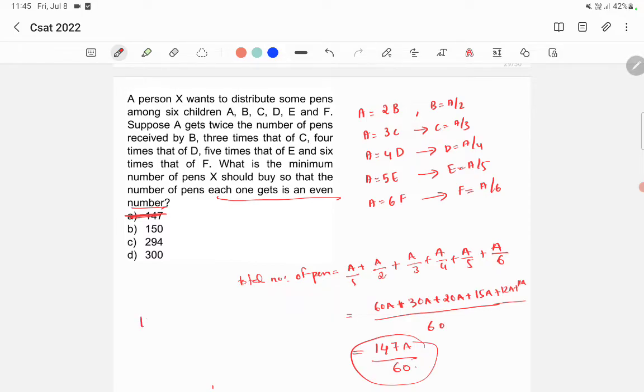We'll check 147A by 60 equals 150. So then you will get A equals 150 into 60 by 147, which is equal to a decimal. You will not get a proper number. But you cannot get a decimal here. Why? Because A is the number of pens that the child A gets. So the number of pens will be a proper integer, a natural number. So option B is again wrong.